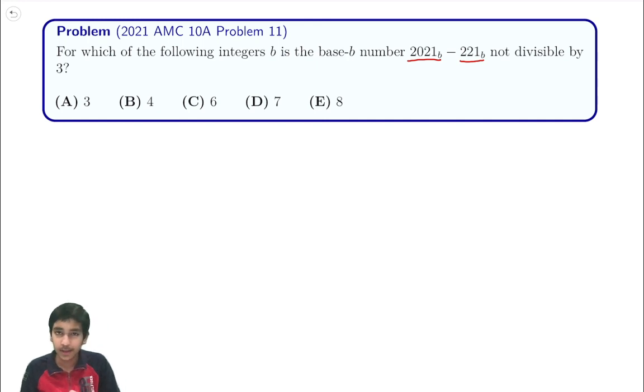So base b notation is a little bit confusing, so let's convert this to an algebraic form in terms of the variable b. 2021 base b equals 2 times b cubed plus 0b squared plus 2b plus 1.